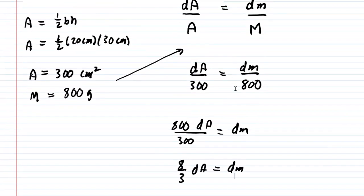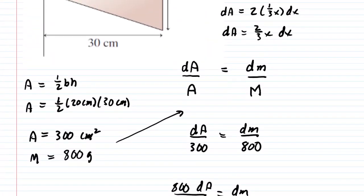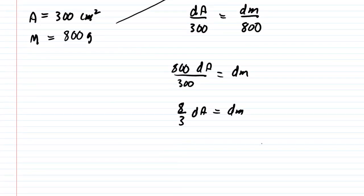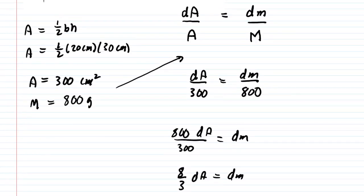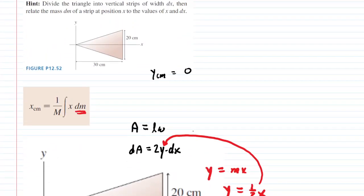Now let's not forget that dA was an expression that we determined earlier. It was 2 thirds x dx. So we can actually make yet another substitution and plug in 2 thirds x dx. And that's going to equal our dm. So that's great. This is the key expression right here. We're going to be plugging that in to find the x coordinate of the center of mass.